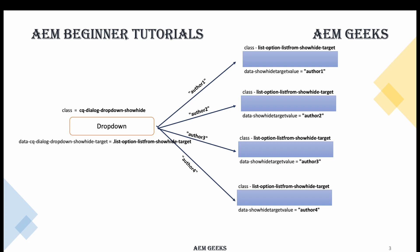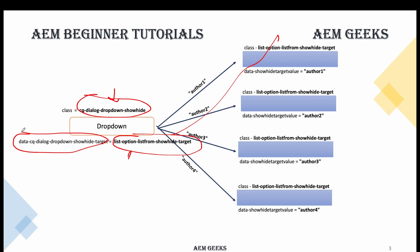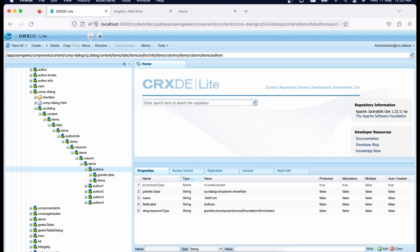One important thing to keep in mind: these values are not standard. You can write any value for the class or data element, but whatever value you add on the dropdown target side must match the value on the container side so that your event handler can identify them. Same thing applies in your JavaScript/jQuery event handler. I'm using this naming convention because it mirrors what's done in AEM core components.